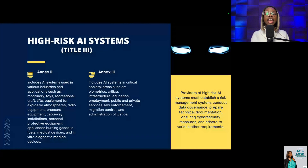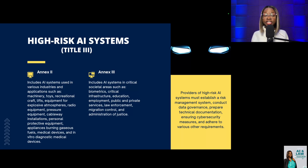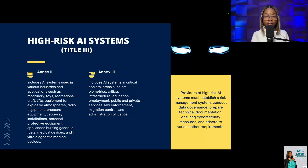High-risk AI systems are categorized under two annexes: Annex 2 and Annex 3. Annex 2 includes AI systems used in various industries and applications such as machinery, toys, recreational craft, lifts, equipment for explosive atmospheres, radio equipment, pressure equipment, cableway installations, personal protective equipment, appliances burning gaseous fuels, medical devices, and in vitro diagnostic medical devices.